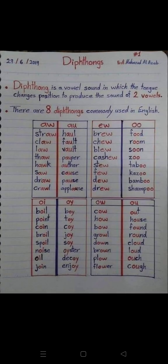Diphthongs. A diphthong is a vowel sound in which the tongue changes position to produce the sounds of two vowels. There are eight diphthongs commonly used in English.